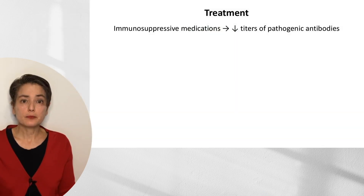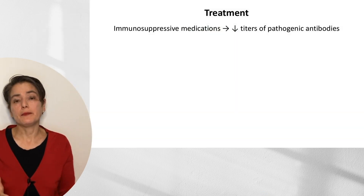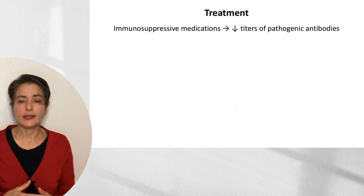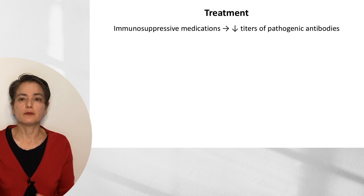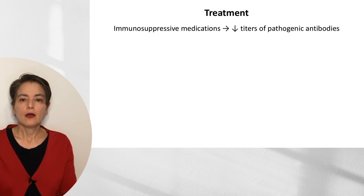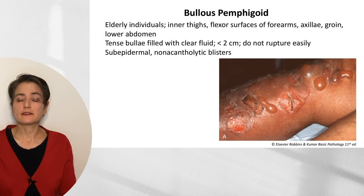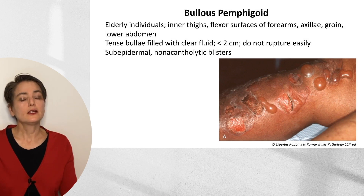How do we treat these patients? We give them immunosuppressive medications, which will decrease the titers of these pathogenic antibodies. Let's move to the next disease, which has a similar name — bullous pemphigoid — but a totally different presentation. It's also autoimmune.